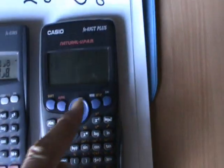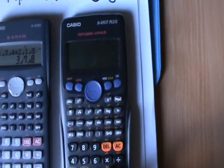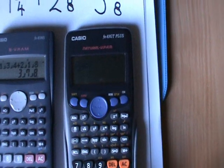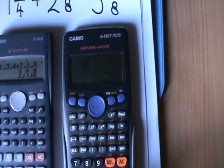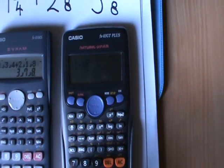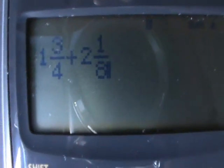So we need to use the arrow key again to get the cursor back to the middle, and then plus. Shift again and fraction button. So we get our 3 little boxes to fill in. 2, and then move the arrow key along, 1, move the arrow key down, 8. So now we've got the correct display on our calculator: 1 and 3 quarters plus 2 and 1 eighth. I need to move the cursor again, because it's still next to the 8. So let's move that along and then press equals.